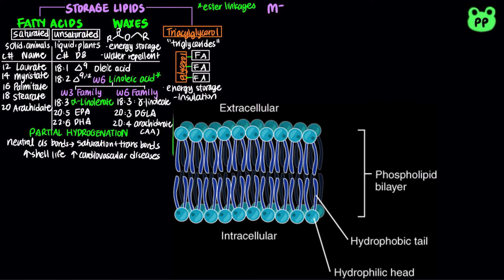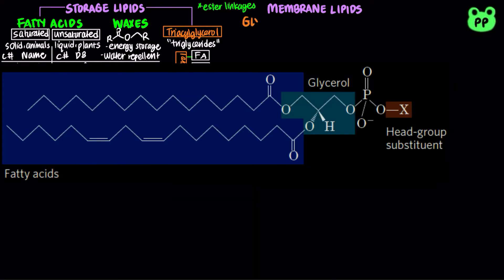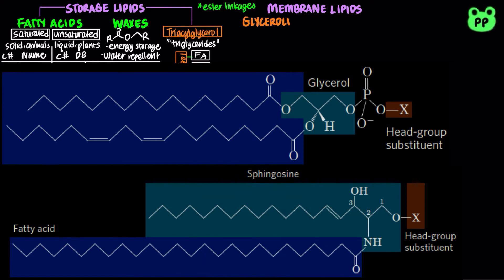Biological membranes are composed of lipid bilayers. All membrane lipids are amphipathic, with polar head groups and one or more hydrophobic tails. Their hydrophobic tails interact with each other, and their hydrophilic heads interact with water to form the bilayer. There are two main types of membrane lipids based on their backbones: glycerol lipids have a glycerol backbone, whereas sphingol lipids have the amino alcohol sphingosine as the backbone.